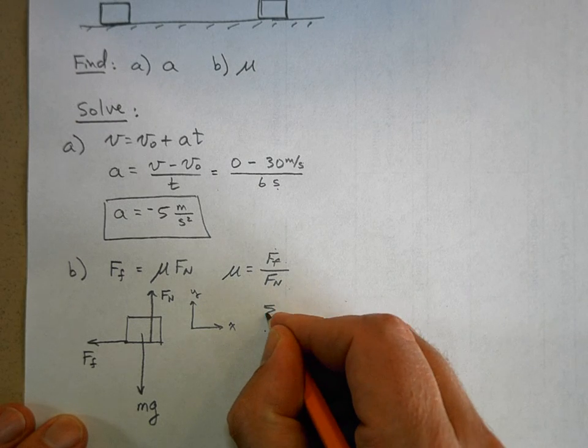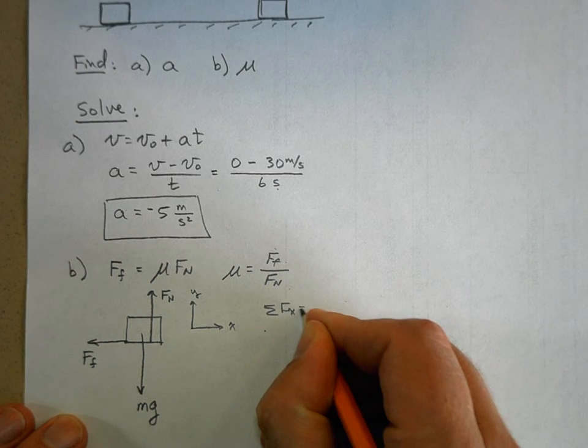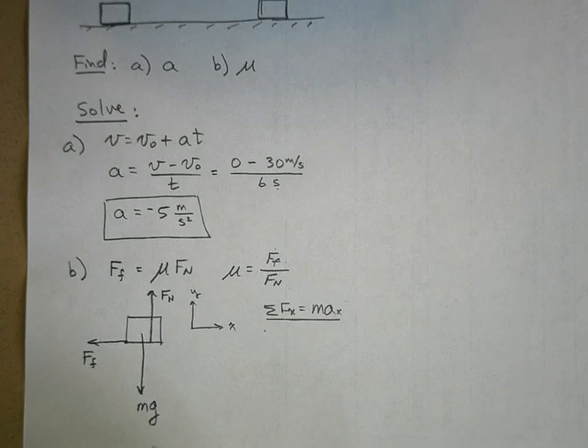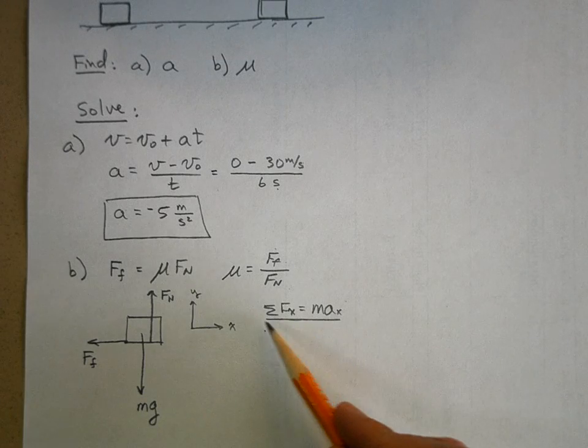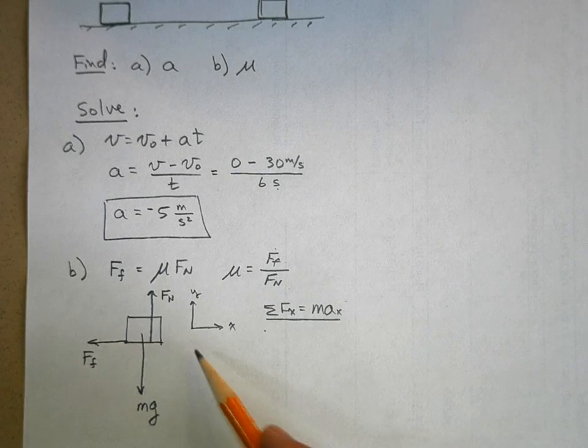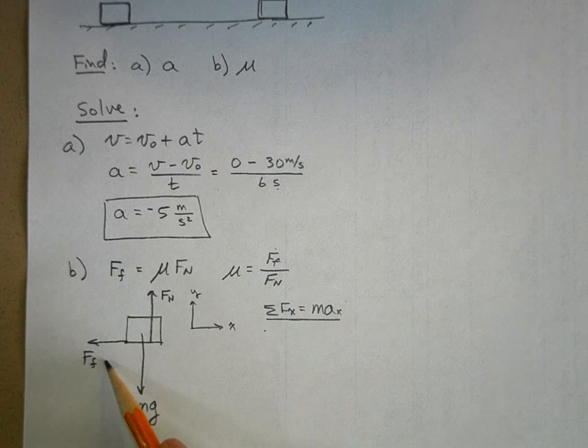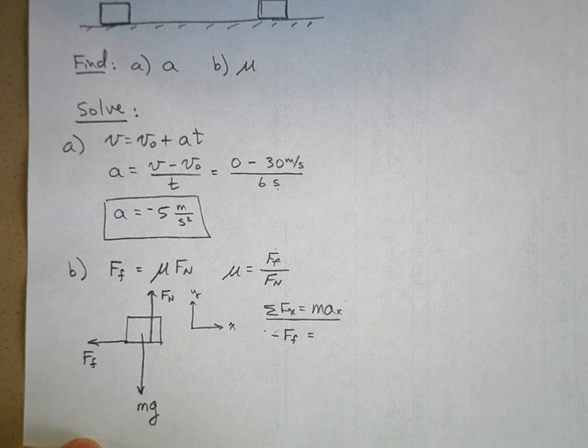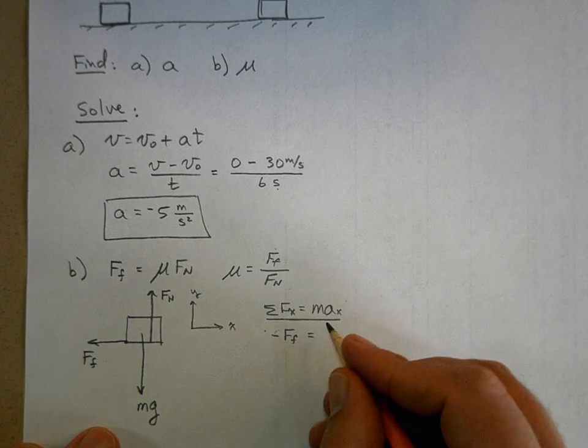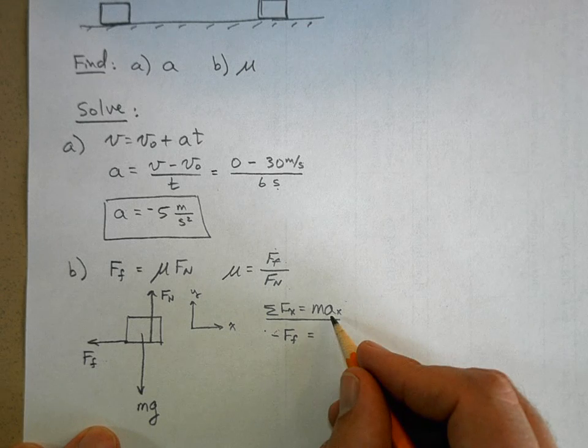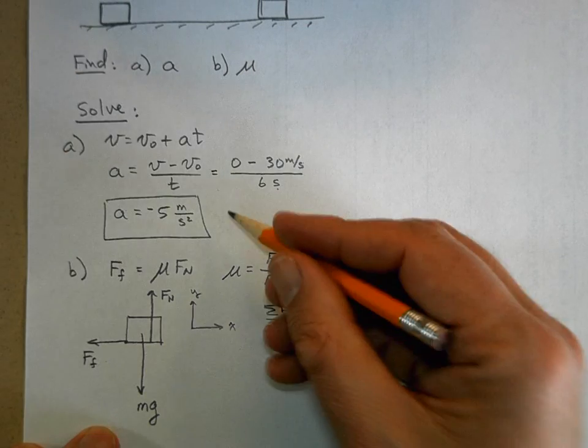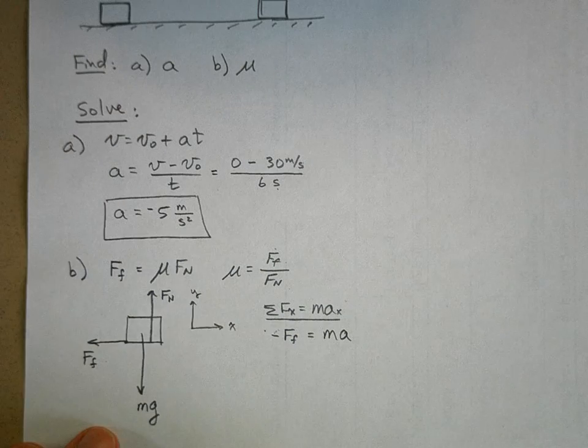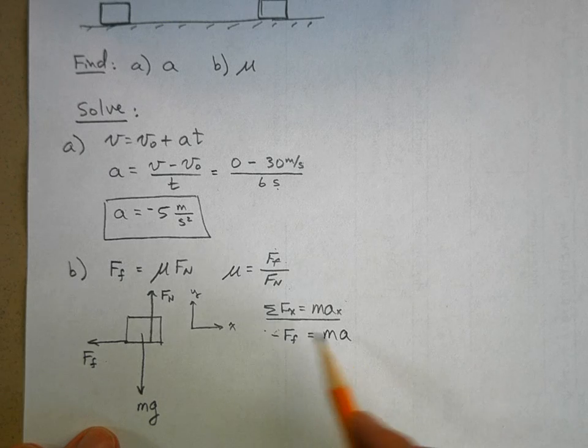So let's sum the forces in the x direction equals ma in the x. Now I look at my drawing, I look at my free body diagram—I mean that's what this is telling me. Hey, look at the free body diagram. How many forces in the x direction? There's only one. It's a negative force of friction is equal to ma. I know what—I mean I don't know what m is, but I do know what a is. I figured that out before. But this is just ma, so I know that the force of friction is equal to ma.